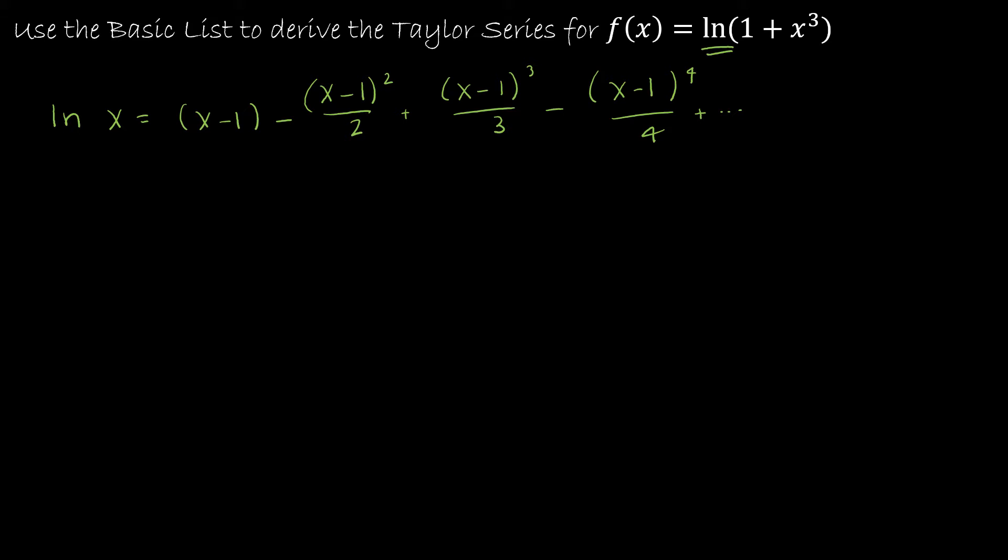And what I'm going to do then is I'm going to replace x with 1 plus x cubed. That's easy enough. So the natural log of 1 plus x cubed requires me to take exactly what I have above, and every time I see an x, replace it with 1 plus x cubed instead. So that would be (1+x³-1) minus (1+x³-1)² over 2 plus (1+x³-1)³ over 3 minus (1+x³-1)⁴ over 4, and so on.